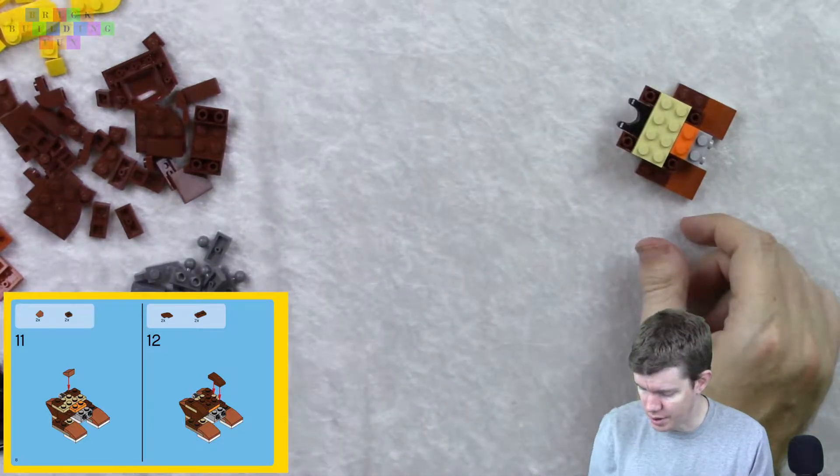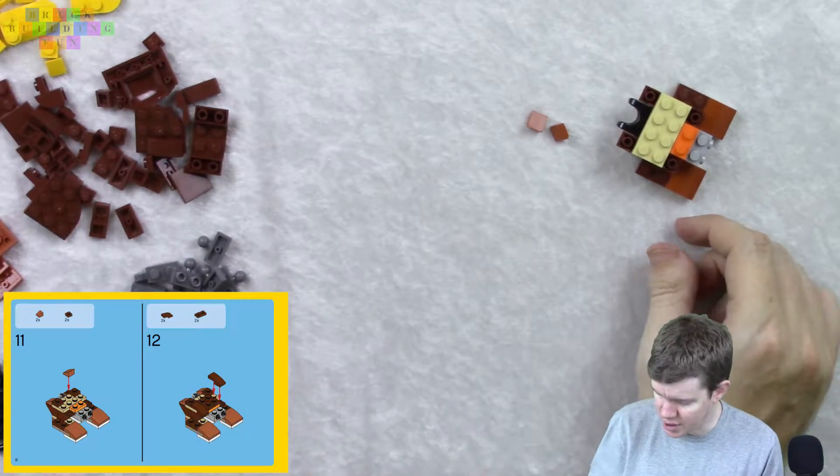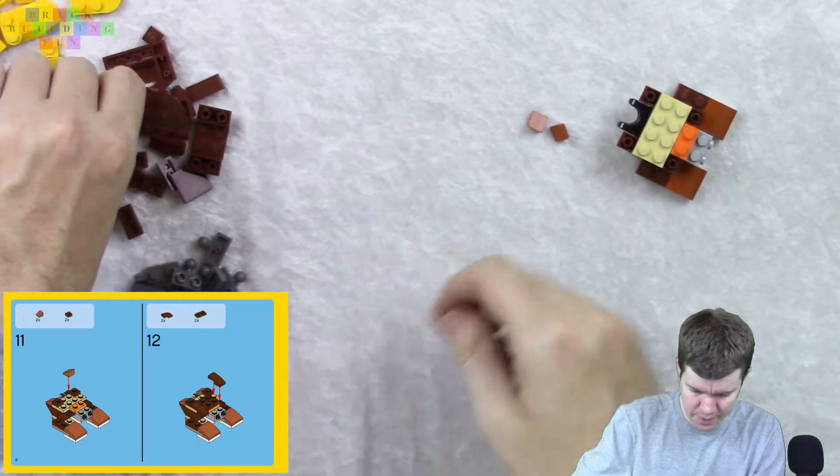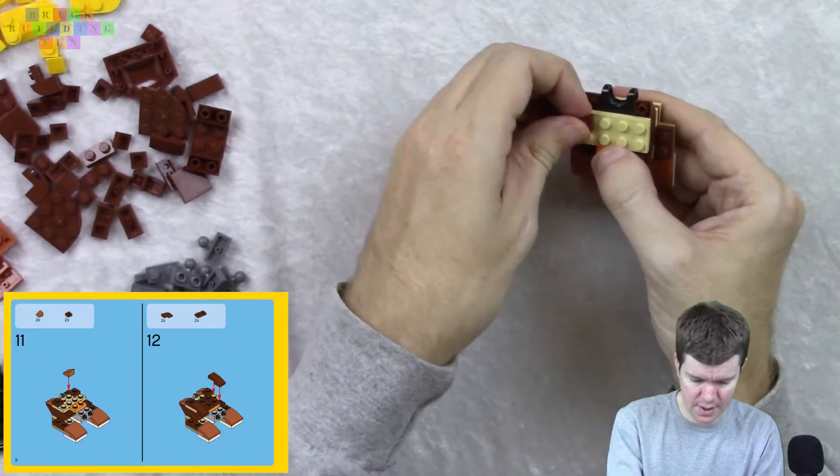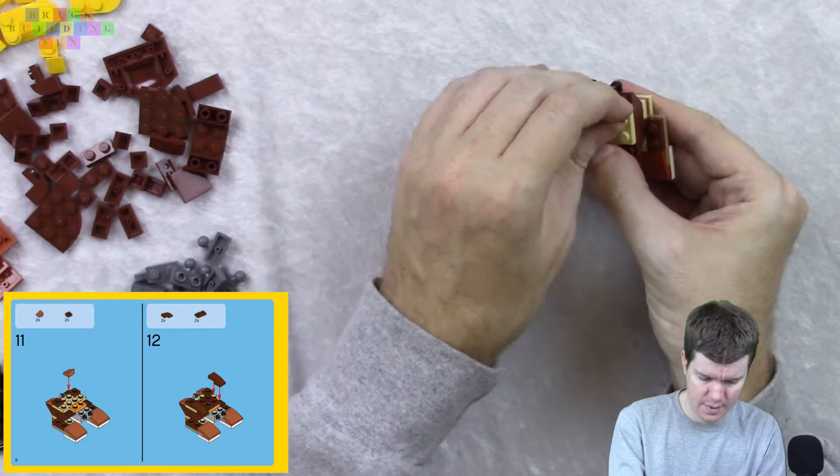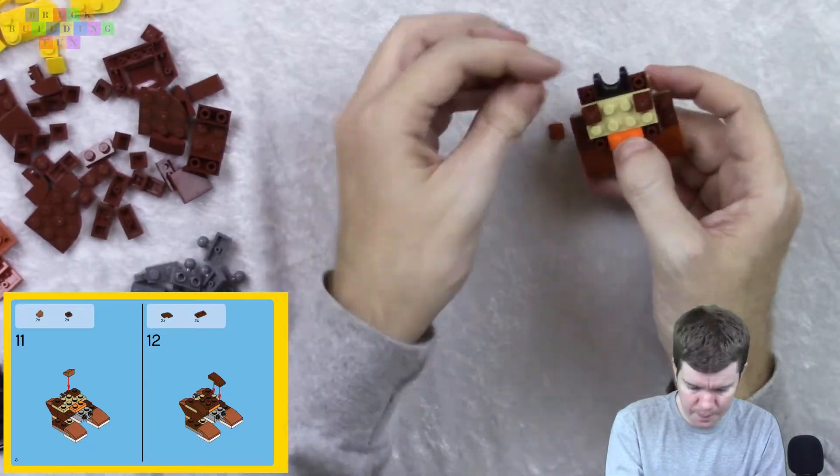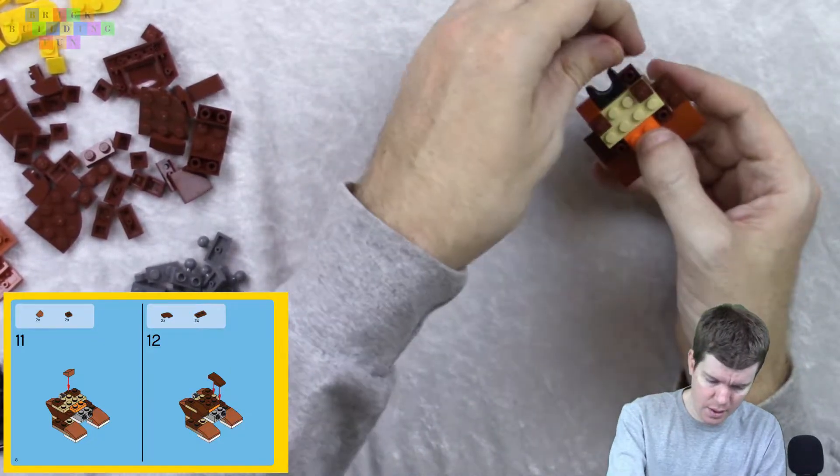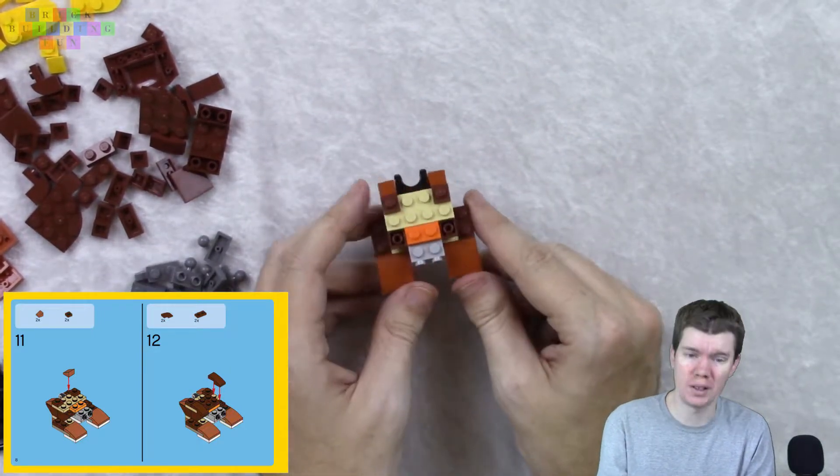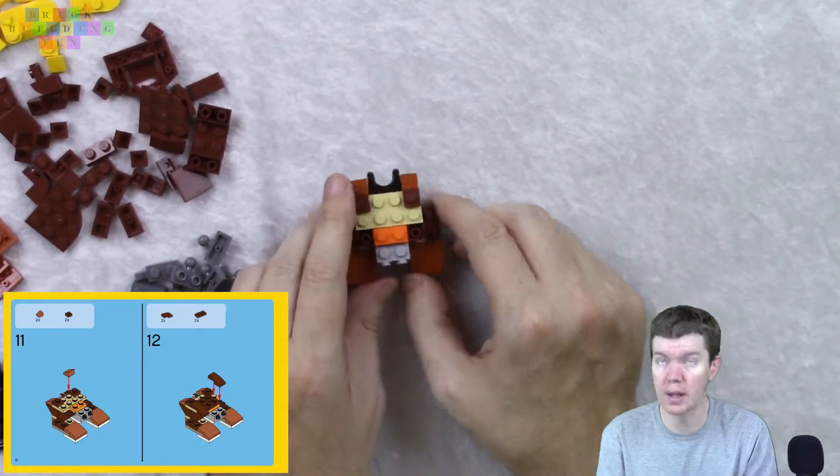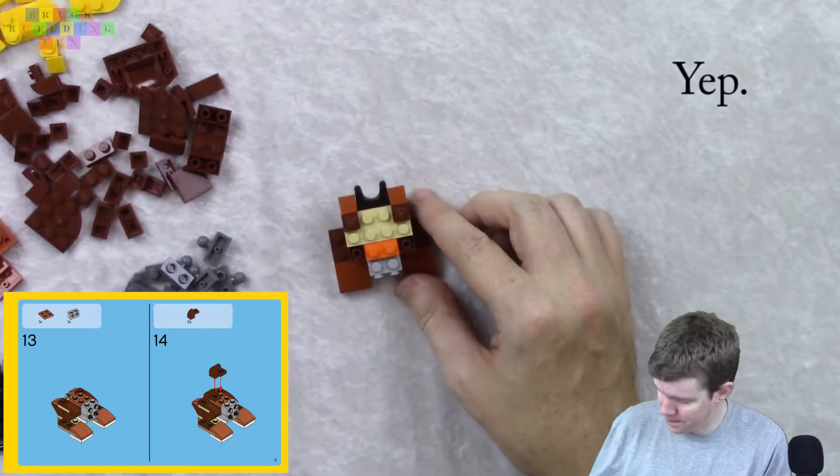Because the colors aren't always the same on the sheet here as they are in real life. Wow. Unsteady hands. There we go, that goes on there. And these go here and here. I might be building this where the instructions are supposed to be. Try to keep it down here, right in front of me.